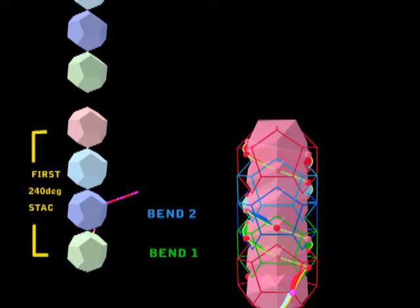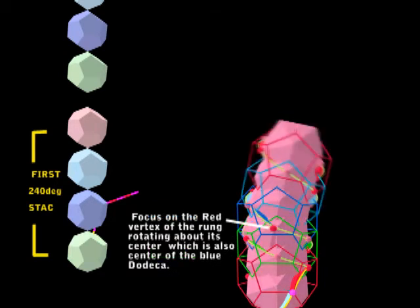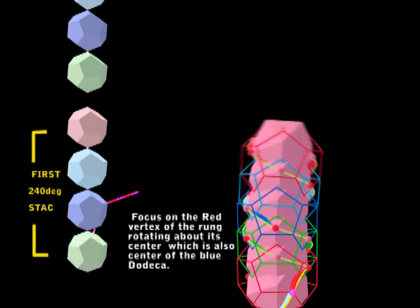Okay, we'll take it back to vertical again, and then I want to repeat this bend showing the icosas. I have something to show you. I'd like you to focus on the little red vertex, which is part of the rung—the center rung—and watch it as it's rotating as it makes the bend.